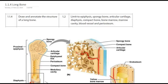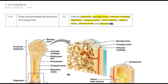This screencast is focusing on the structure of a long bone. When looking at a long bone, we will limit the features to the epiphysis. Having said that, we will identify a proximal and distal epiphysis, spongy bone, articular cartilage, our diaphysis, our compact bone, bone marrow, our marrow cavity, blood vessel, and periosteum.